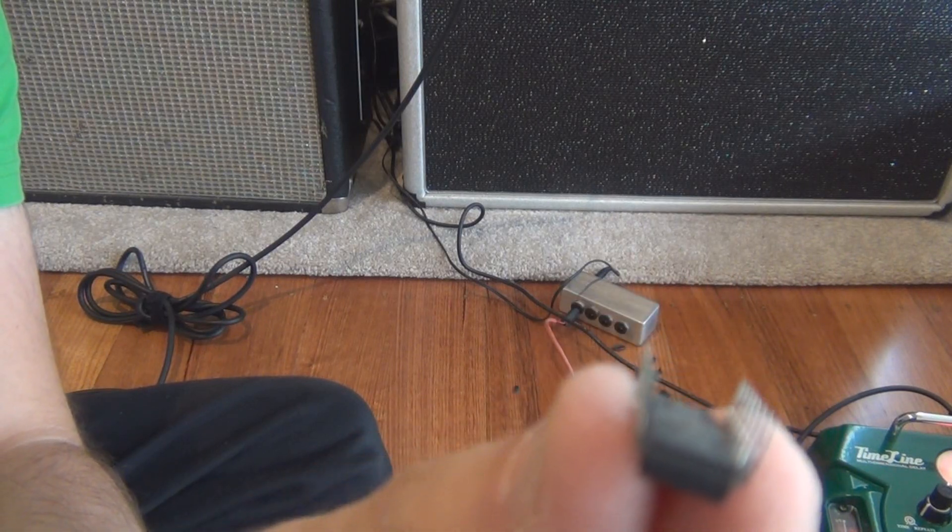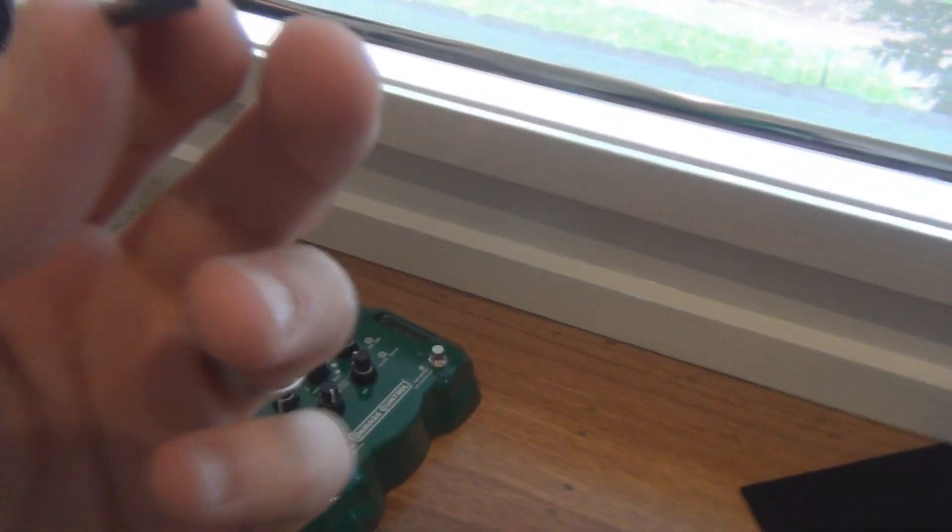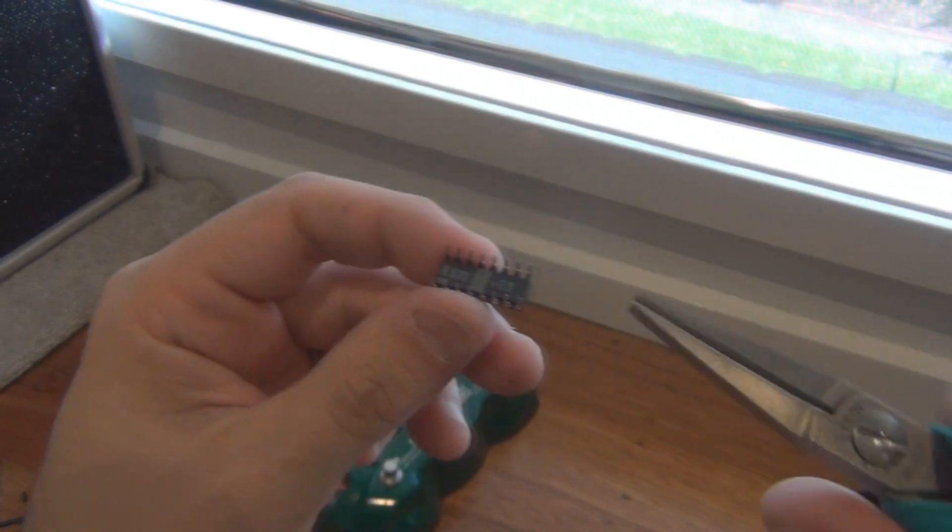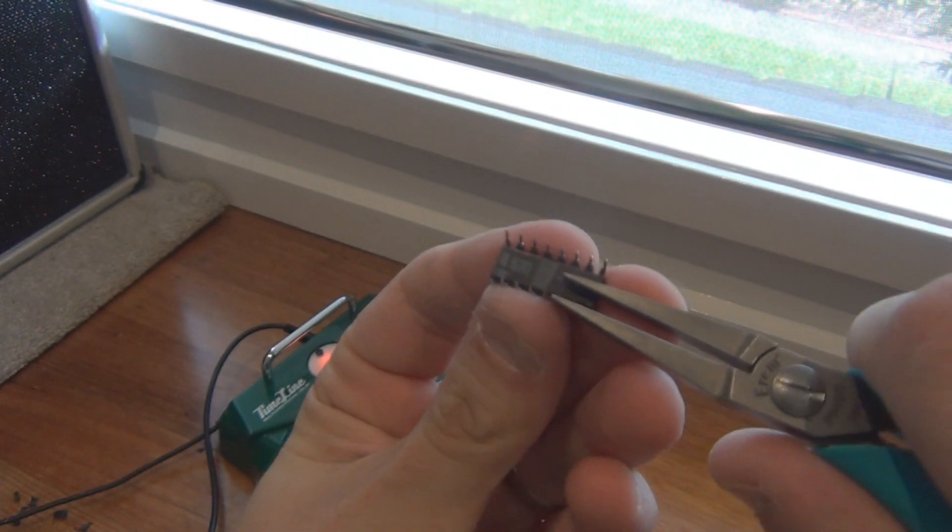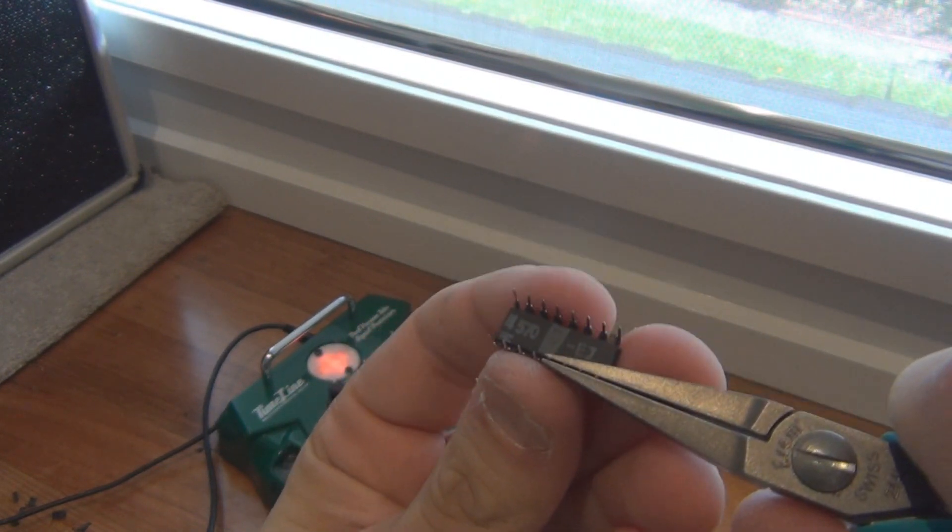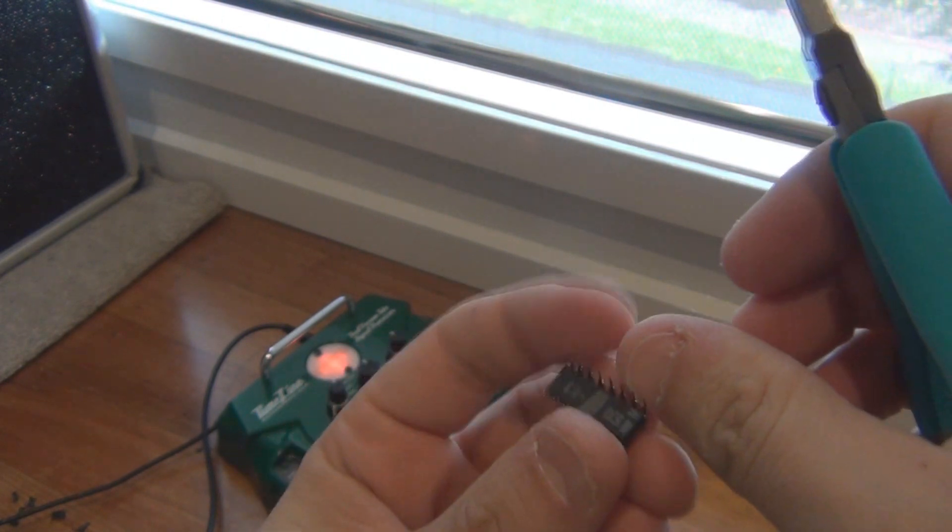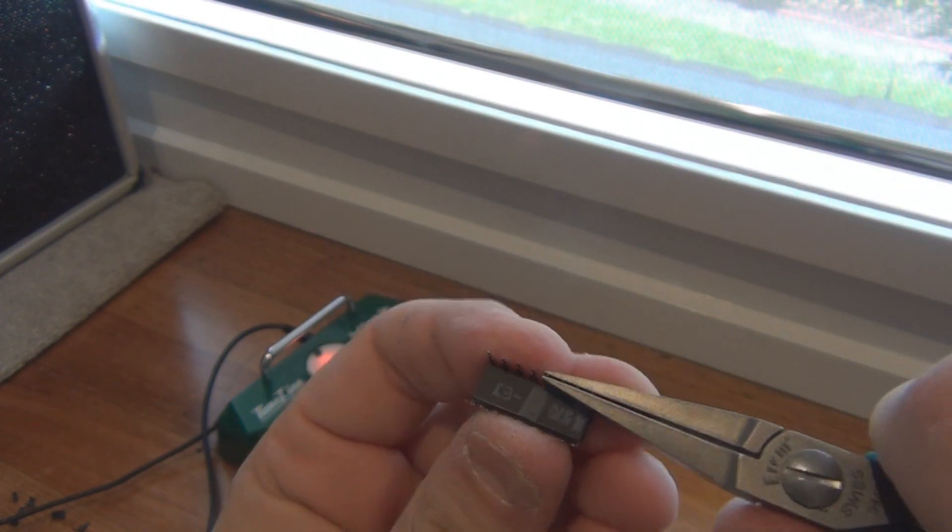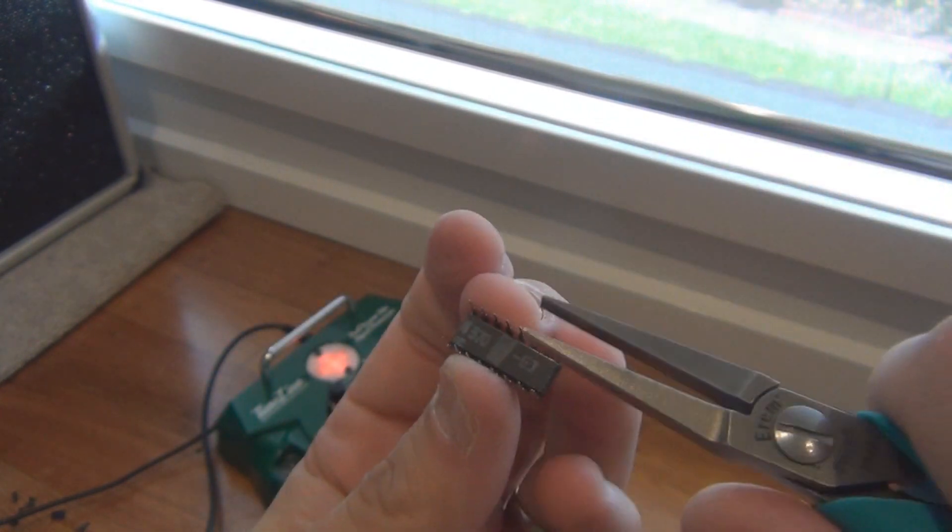You need to bend those inwards towards the body of the IC. So what I do is I use duckbill pliers. You can use any pliers but I find duckbill to be the best. I grab four at a time and I just bend them in about a millimeter like that on all sides until they're kind of curved inward a little bit.